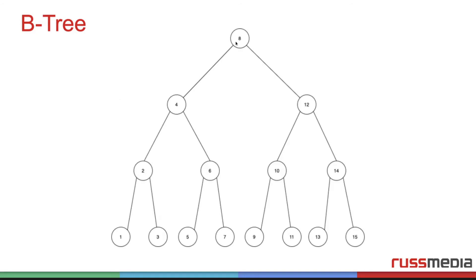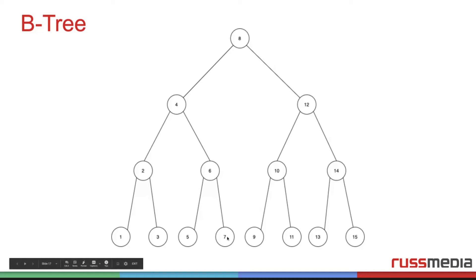For example, we want to pick out seven. We have here our root, our starting block. Seven is lower than eight, so we go to the left side. Now we check with four, and we see seven is higher than four, so we go to the right. Now we are at six, and we see seven is still higher, so we go down here to select it. It's quite easy and fast — we only had to check three paths or blocks to get to our seven.